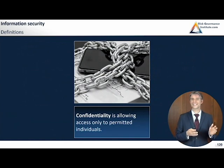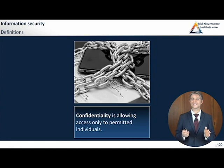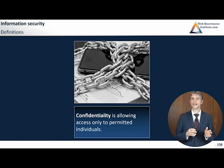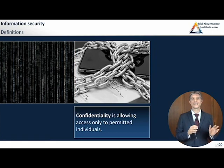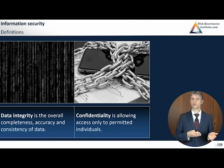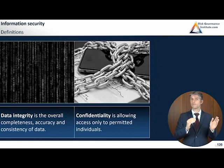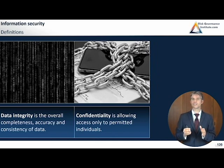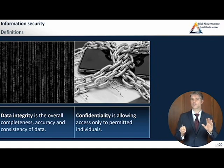Now for more precise definitions. Confidentiality is allowing access only to permitted individuals - blocking unauthorized access to certain information. Data integrity is the overall completeness, accuracy, and consistency of data. Much of the work verifying data integrity involves error checking - verifying completeness, correctness, and consistency, such as two different classification systems for the same thing, or numerical listings that skip numbers, which would create a consistency problem.